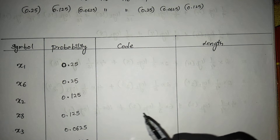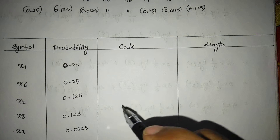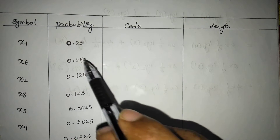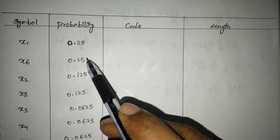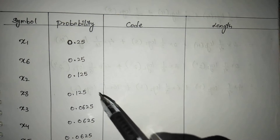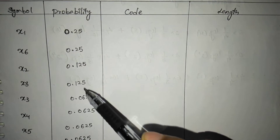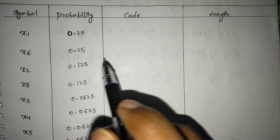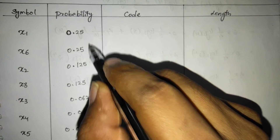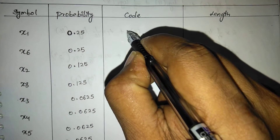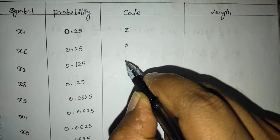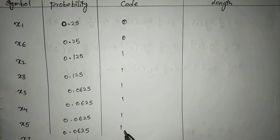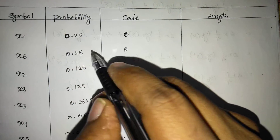We divide the list into equal probabilities. Adding the top two: 0.25 plus 0.25 gives 0.5. Adding the remaining probabilities — 0.125 and the rest — also gives 0.5. This is called equal probability division. For the top group we assign 0, and for the remaining group we assign 1.